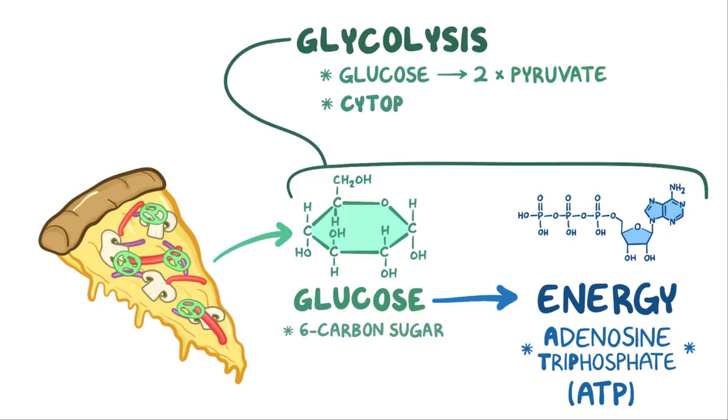Now glycolysis happens in the cytoplasm of cells, and no special organelles or even oxygen are needed to turn glucose into ATP. Therefore all cells can use glucose to make energy, and it's possible to do glycolysis even when oxygen levels are low.